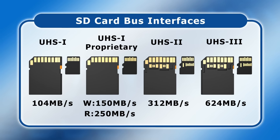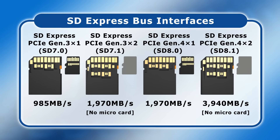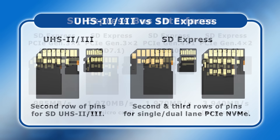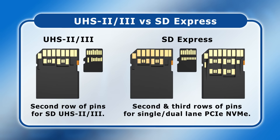This is not least because we now have four additional standards under the collective banner SD Express. Introduced from 2018 onwards, these transfer data over a PCIe interface at either PCIe Gen 3 or Gen 4 speeds, using either one or two PCIe lanes. This is achieved using a second row of pins for the single-lane specifications and two extra rows of pins for dual-lane. Importantly, the second row of pins on an SD Express card is not backwards compatible with UHS-2 or UHS-3.